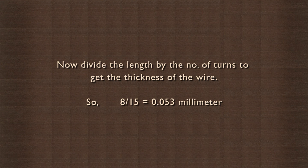Now divide the length by the number of turns to get the thickness of the wire. So 8 divided by 15 is equal to 0.053 mm.